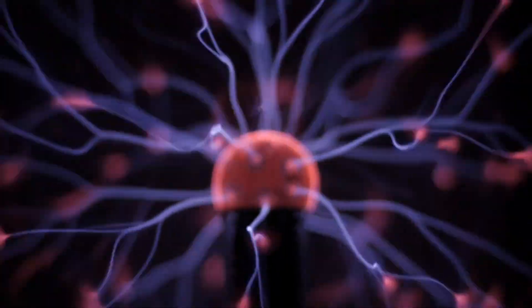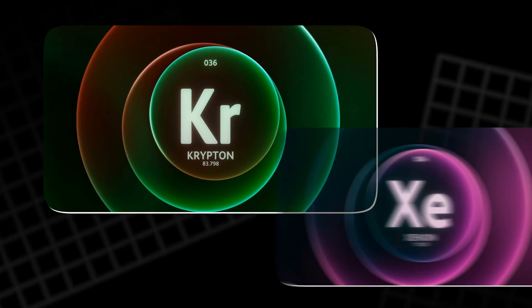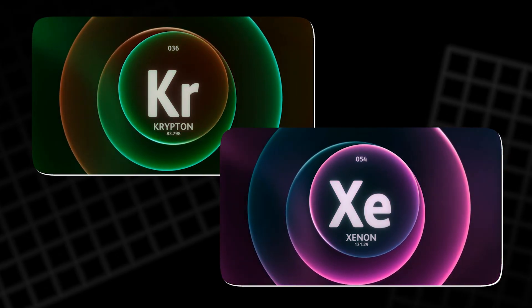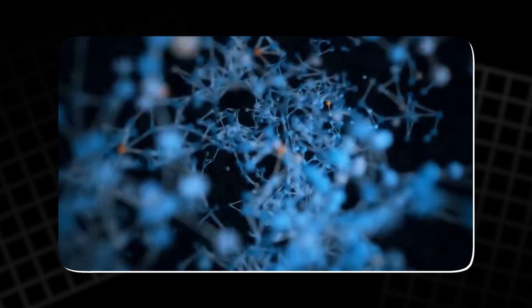Neon emits a bright red-orange glow that has become iconic in neon signs. Argon gives off a cool bluish light, while krypton and xenon produce softer, whitish tones with hints of purple or blue. Helium, though less common in lighting, radiates with a gentle pink or peach hue when energized.